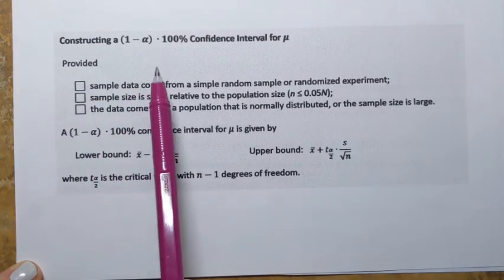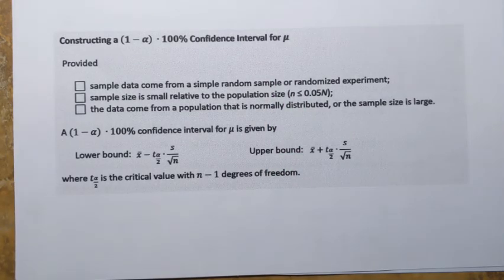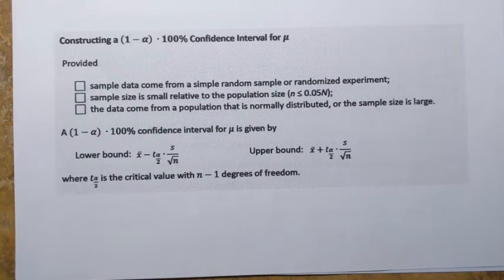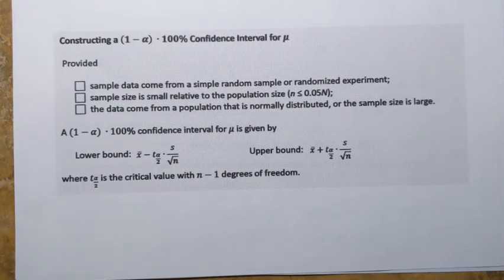Let's learn how to construct a confidence interval for population mean. Most of the time we don't know what population mean is — to find it we'd need access to every individual in the population, which is usually impossible. So instead we obtain a sample, calculate the sample mean, and use that to estimate population mean by providing an interval. We say that with a certain degree of confidence, population mean falls within that interval. The approach is similar to constructing an interval for population proportion, except here we use Student's t-distribution instead of the normal distribution.